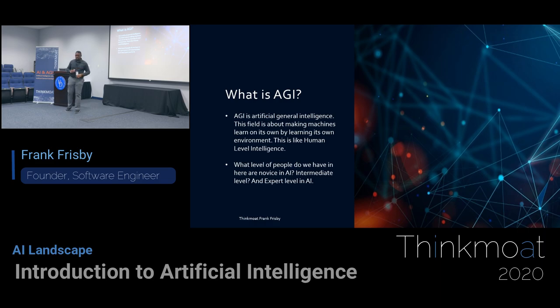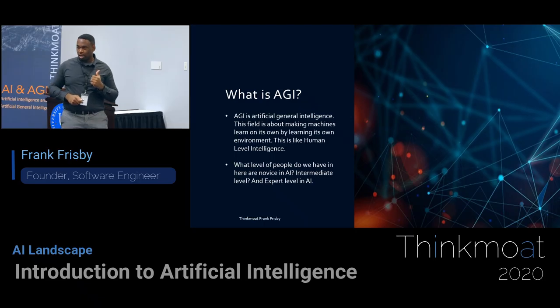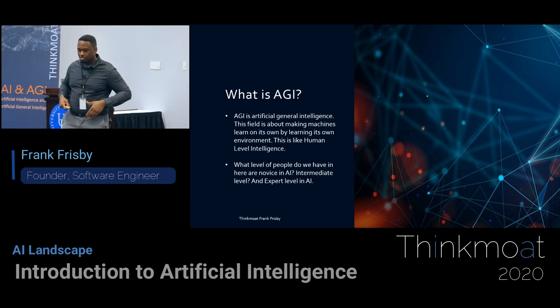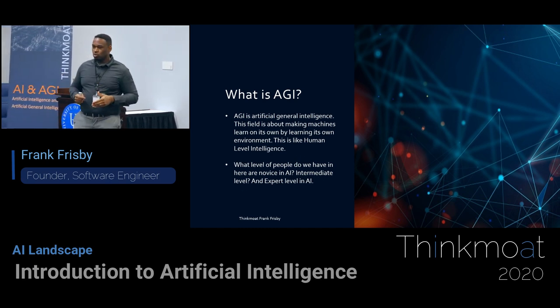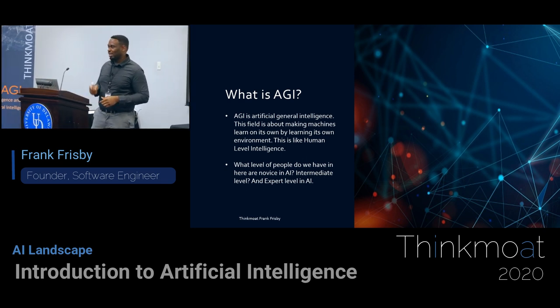AGI, different from AI, is about a whole breadth — a general concept of learning something new it has never learned before, understanding what that means, and continuing to build upon that without any people going in and helping or teaching it. It learns on its own. This is where companies now are focused. Most companies are using AI in production, while companies like Google and DeepMind are focusing their attention on AGI.